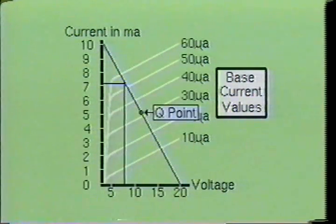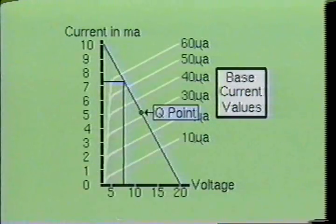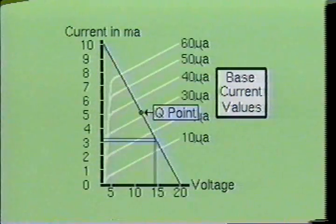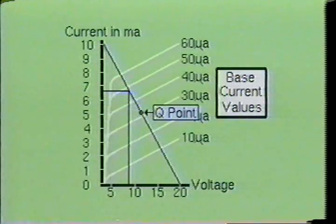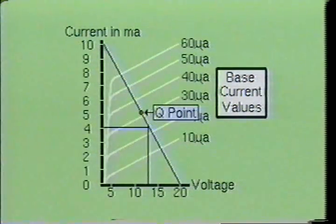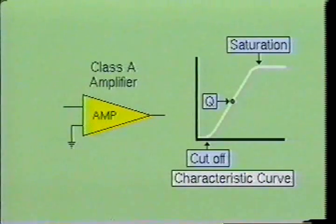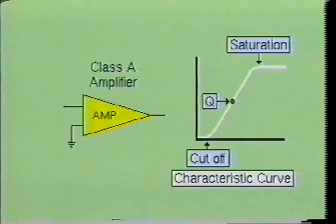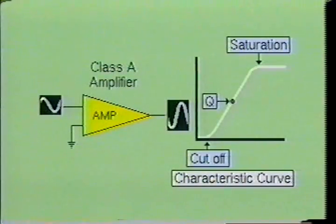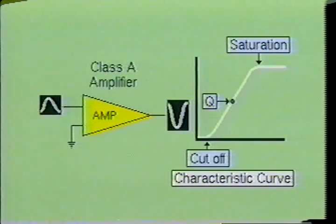Small signal amplifiers are designed to increase the amplitude of the incoming signal. To allow for the widest variations in amplitude, the Q point should be located at the midpoint of the DC load line. This allows the signal to fluctuate the maximum amount between these two extremes. The quiescent operating point is located at the midpoint of the linear portion of the curve. If the input signal is not too great, the circuit will operate in a linear mode and negligible amplitude distortion will occur. This is the operating point of a class A amplifier.